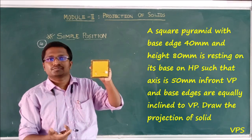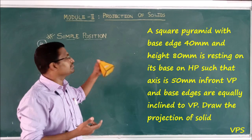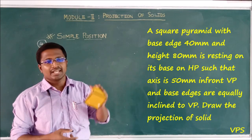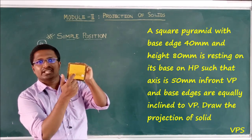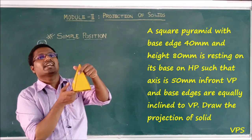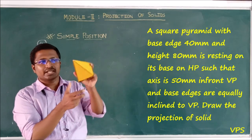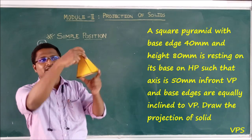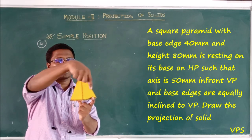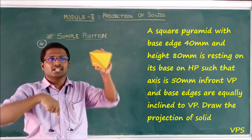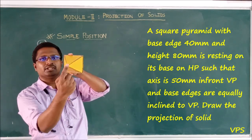Look at the square — you can see it here. The inside side is visible. This is the front view. This is the top view. This is the square shape.